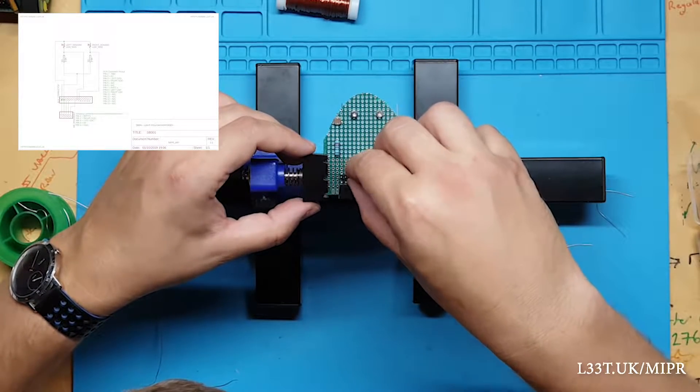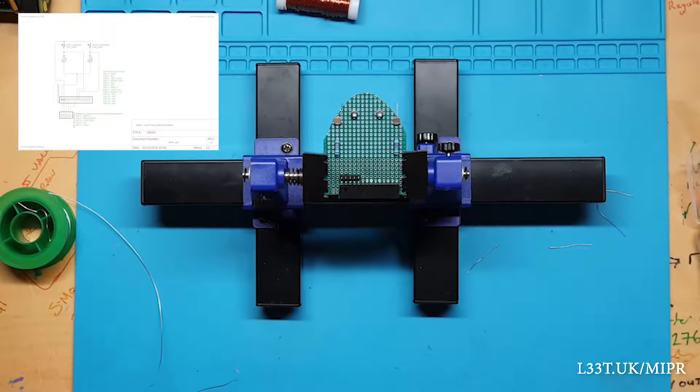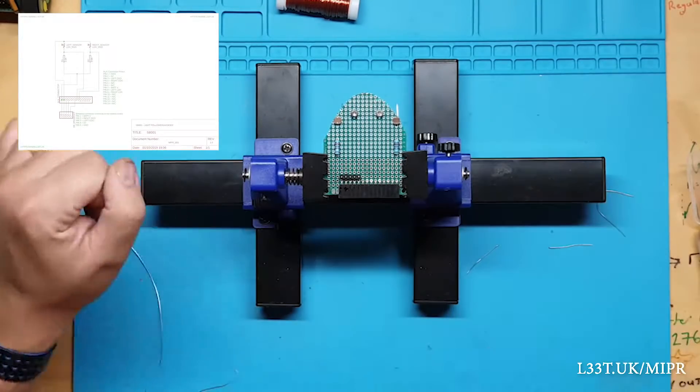Now we will add a 5-pin male header so we can connect the odometry module. This data will pass through the sensor board into Mipper.